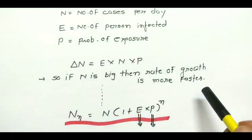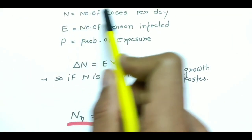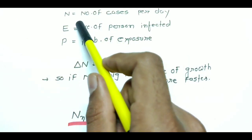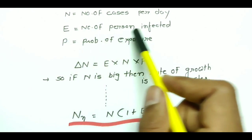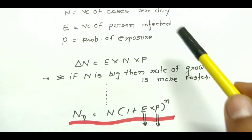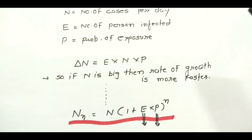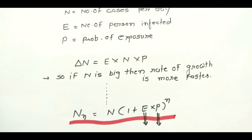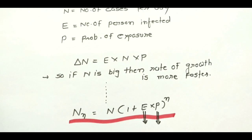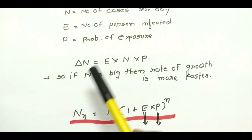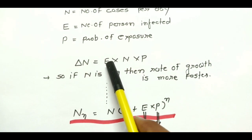Let us try to understand this mathematical solution. We define some quantities. Let's assume that N is the number of cases on a particular day — how many persons are infected. We are talking about today, so what was N for today and how many new people were infected? E is the probability of exposure, meaning those who are infected — if they are out among others, what percentage chance is there that other people get infected? That is P, probability.